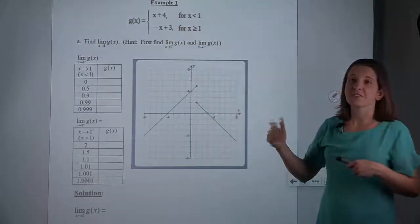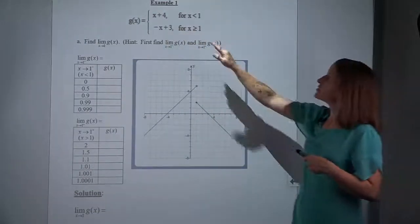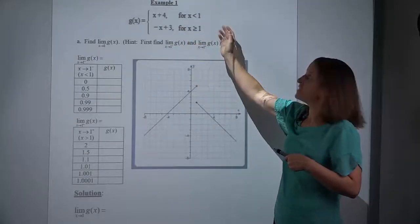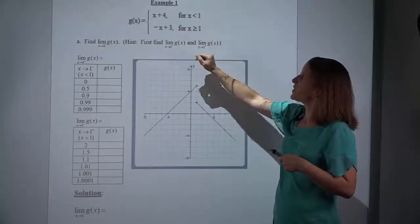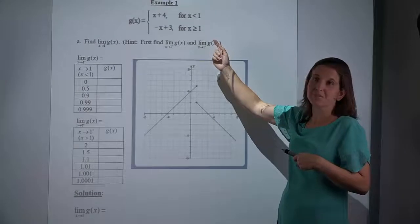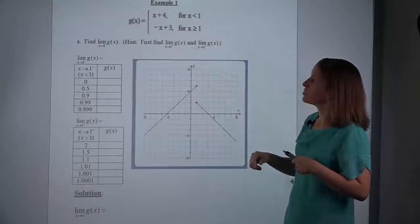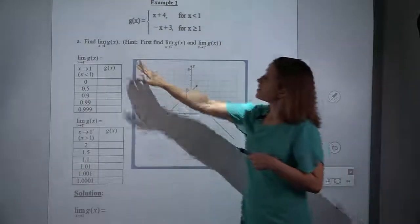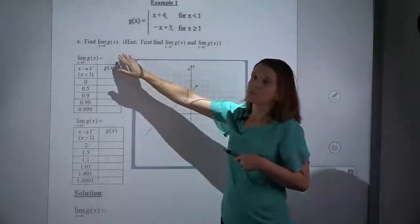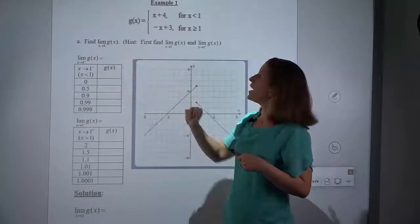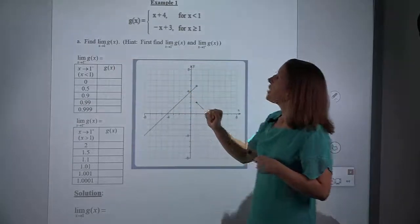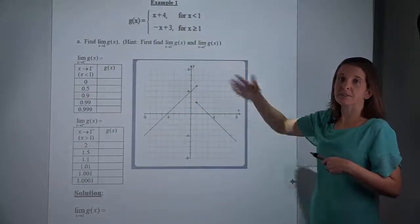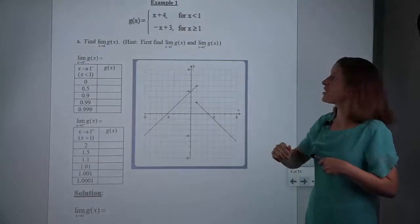For this function, we use x plus 4 for any x that is less than 1, and we use negative x plus 3 for any x that is greater than or equal to 1. The problem says: find the limit as x approaches 1 of g of x. But this is actually a hidden three-part question because of the theorem that we just read.